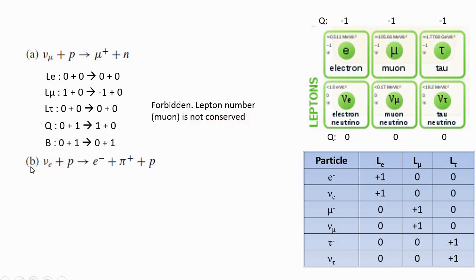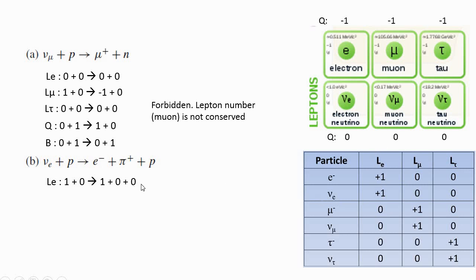Next question. This decay releases one electron, so it must involve the electron number and electron neutrino. At the left-hand side, there is only one electron neutrino, so the lepton number is one. Proton has zero lepton number. At the right-hand side, the electron has one lepton number. The other particle is not a lepton, so it's zero.